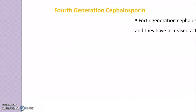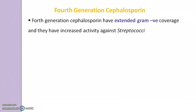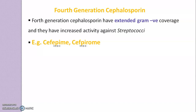Moving to the 4th generation cephalosporins, which have extended gram-negative coverage and increased activity against streptococci. Examples are Cefepime and Cefpirome. You can remember them by the presence of the letters PI in their names, which helps identify 4th generation cephalosporins.